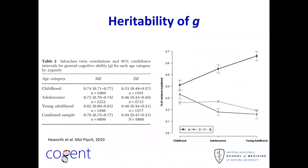Another long-standing and extremely well-replicated observation is that G tends to be quite heritable. There have been countless twin studies over the last century, and the heritability — shown on the upper line — tends to be in the 0.5 to 0.7 range. It tends to be stronger in adulthood than in earlier childhood. Suffice it to say that at least half of the variance, or a bit more, is genetically mediated.